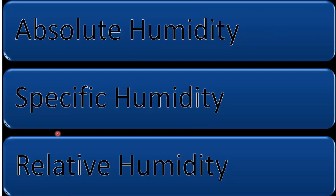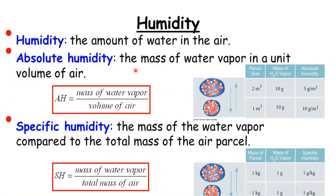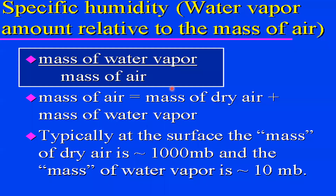There are three types of humidity measurement: absolute humidity, specific humidity, and relative humidity. Absolute humidity is the exact amount of water vapor present in a given volume of air, with the formula: mass of water vapor divided by volume of air. Specific humidity is the mass of water vapor compared to the total mass of air — that is, dry air plus water vapor. Typically at the surface, the mass of dry air is 1000 millibars and the mass of water vapor is only 10 millibars.